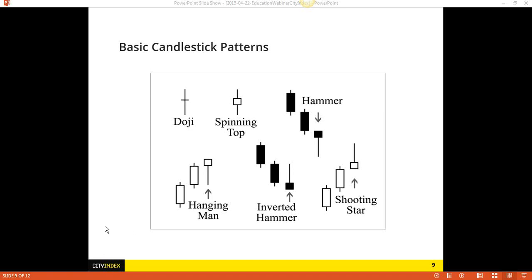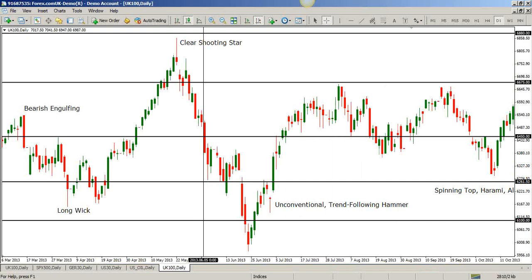Do I have anything to comment on Heikinashi candlesticks? I don't like them because they don't give the true price — they're giving average prices. So I don't usually use Heikinashi. They give a very good smoothing of price, which is basically what moving averages do. But because they're averaging price rather than giving the current precise price, I don't like them because they can be deceiving.